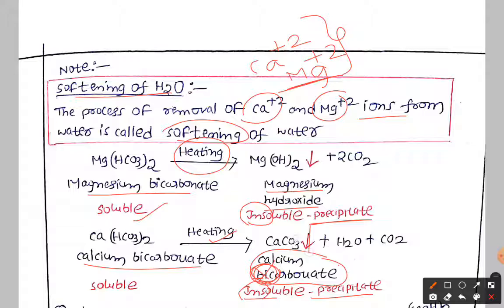The downward arrow in the equation indicates a precipitate. So here, we are simply removing the cations — calcium is removed — and you are going to get soft water.